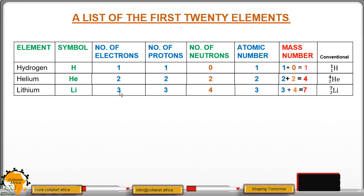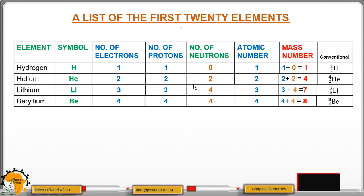We proceed to lithium, number 3 element in the periodic table, with number of protons 3 and number of neutrons 4. Hence the atomic number will be 3 because we have 3 protons. The mass number will be 3, which is the number of protons, plus 4, the number of neutrons, together 7. Hence, 7 up here as the mass number, and down here we have the atomic number or the number of protons.